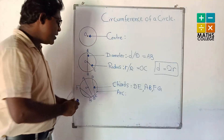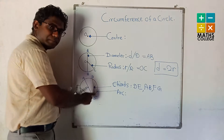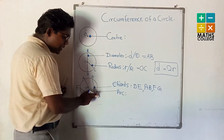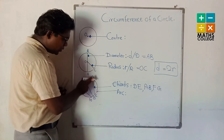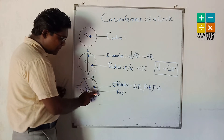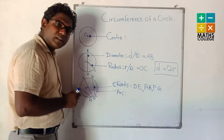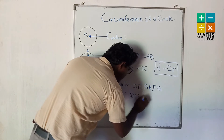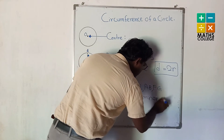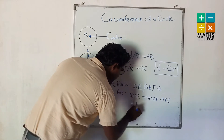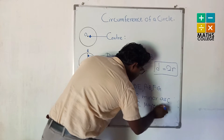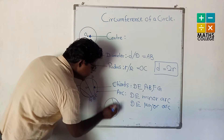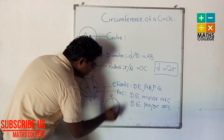Another element is arc. Arc means the curve line — the curve line that forms part of the circle. We have arc DE. There is DE minor arc and DE major arc. This curve portion is called the arc.